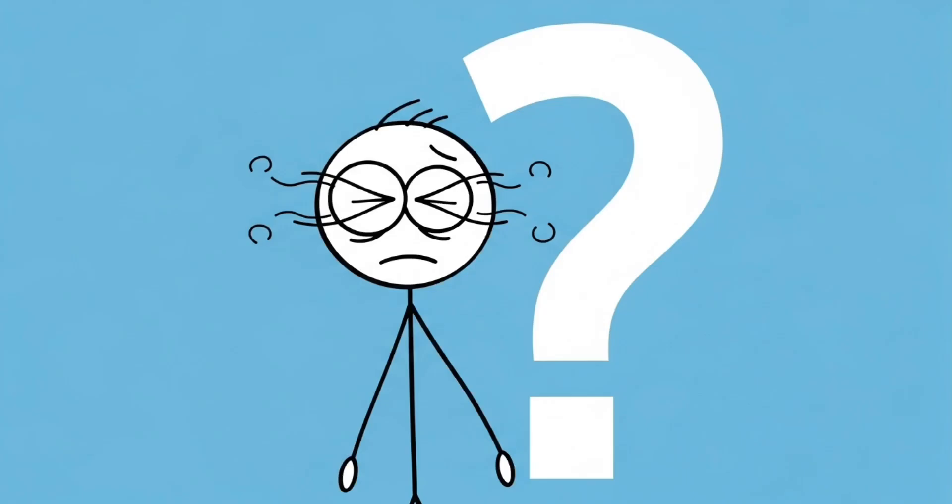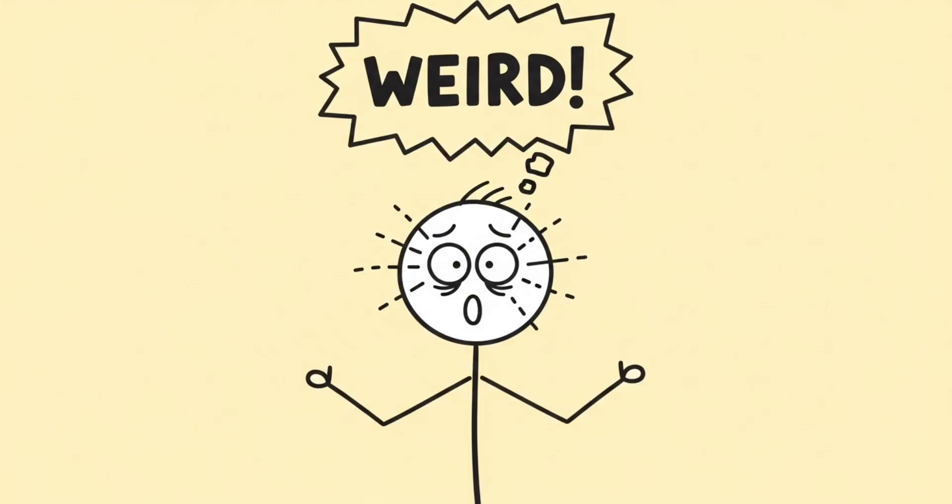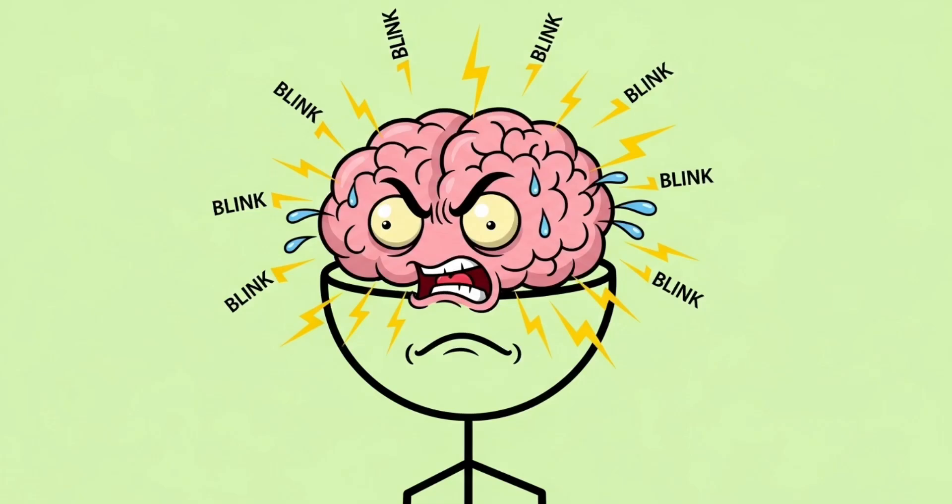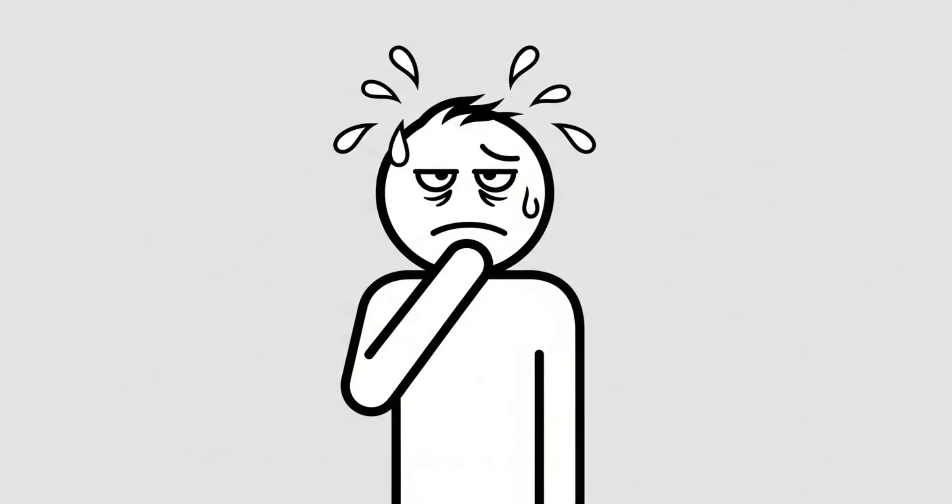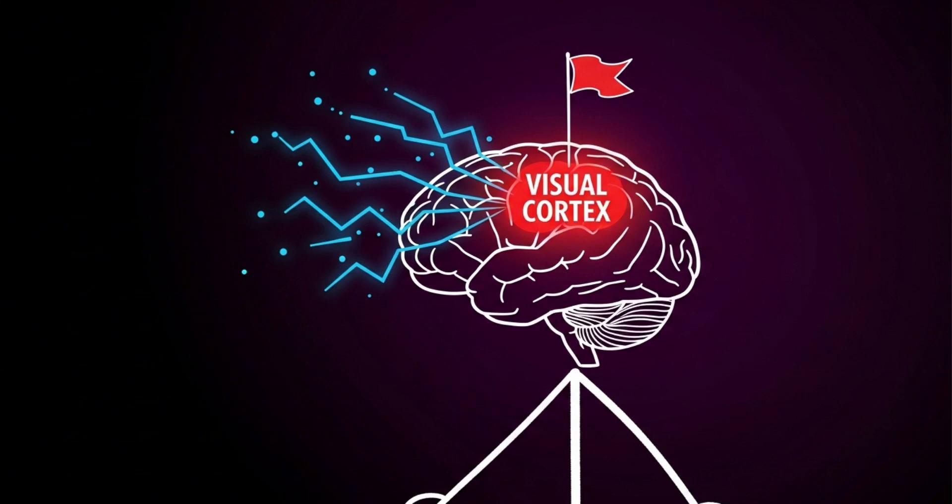Number six, the blinking paradox. Let's play a game, blink as fast as you can right now. Go ahead, I'll wait. See how weird that feels? That's how your brain feels when someone's lying to you. When people lie they either blink too much or not at all. It's an involuntary reaction, the body trying to regulate stress or maintain control. And your brain notices it.